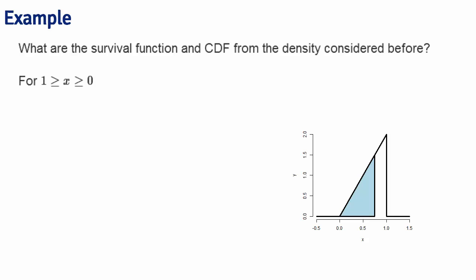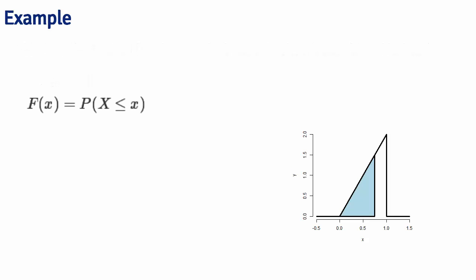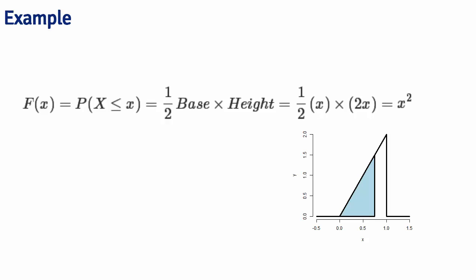For the right triangle density, the CDF evaluated at any x is the area of the right triangle from 0 to x. That is one-half times x times 2x, which simplifies to x squared. So the CDF is F(x) = x². This function gives the probability that x proportion of calls or fewer get answered on a randomly sampled day.